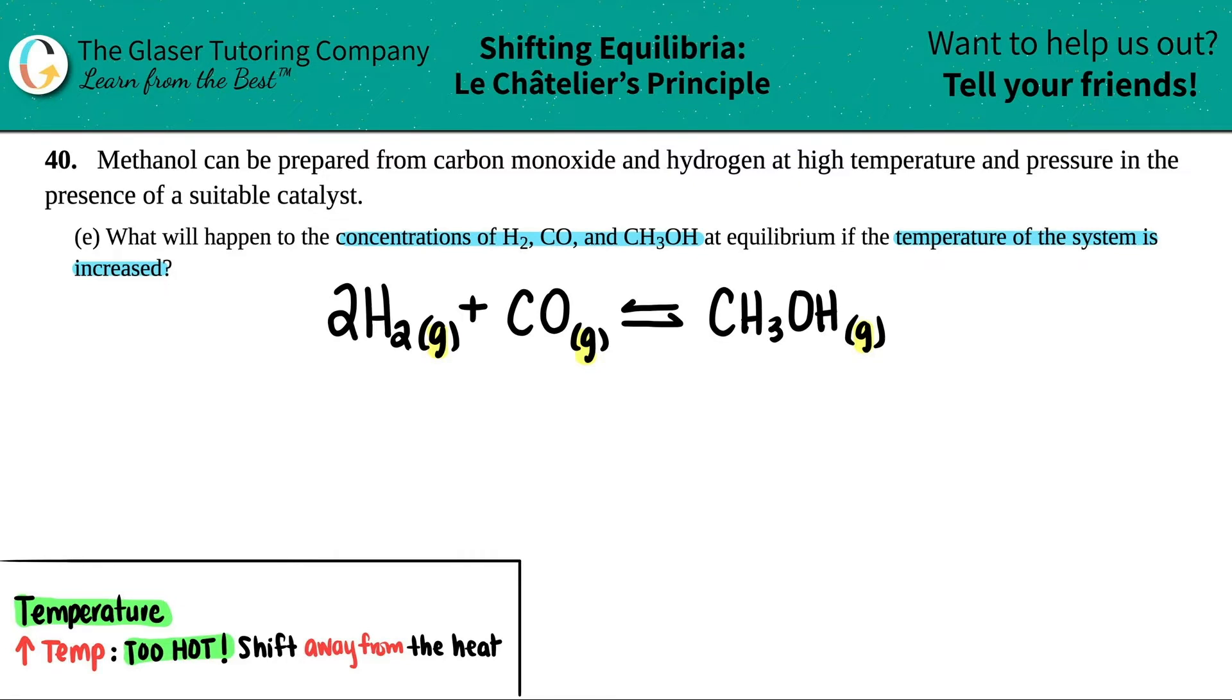Now when we looked back at letter A they did tell me that the delta H was negative 90.2 kilojoules. So we definitely need to know what the delta H is when we're doing temperatures.